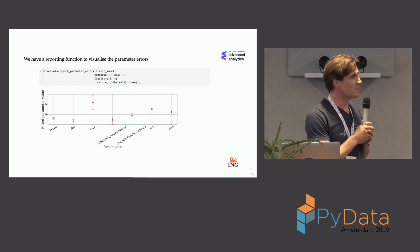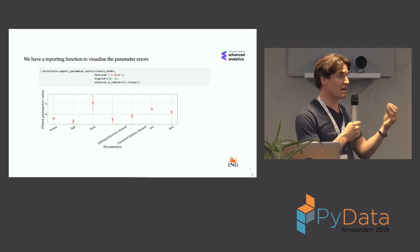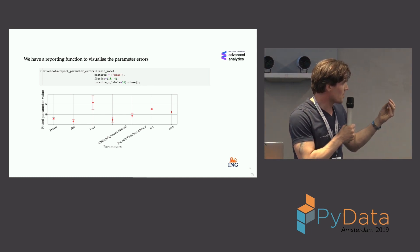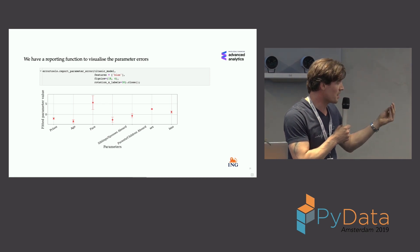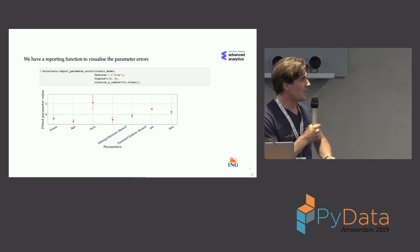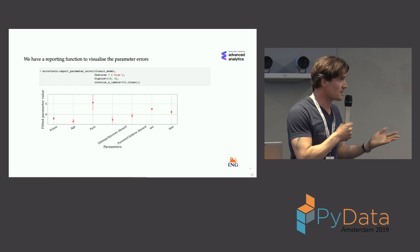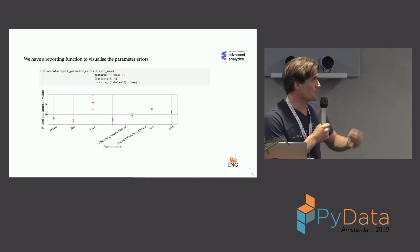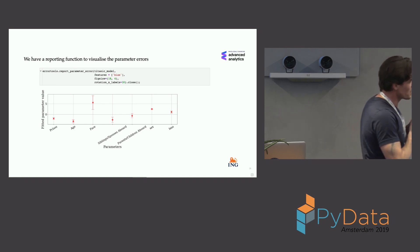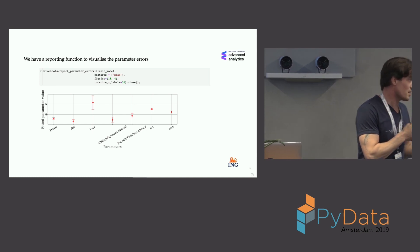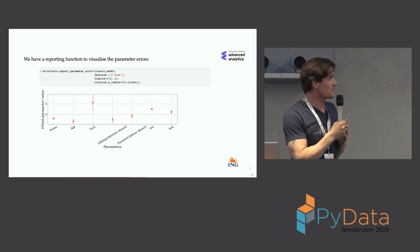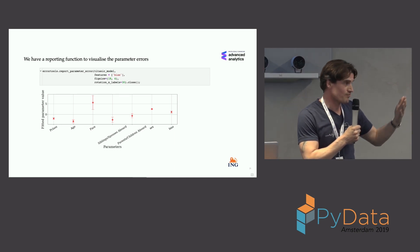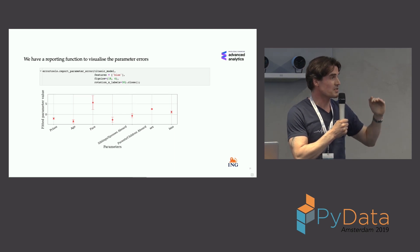You can see that fare has a large parameter value — so the amount of money paid to board the ship has a very large parameter and might seem like an important feature. However, it also has a large uncertainty, so you're not very sure in that claim. If you look at sex — whether you're male or female — it has a fairly large value but a tiny uncertainty, so in claiming this feature is important you're actually quite sure.